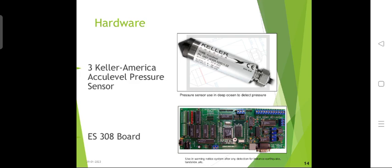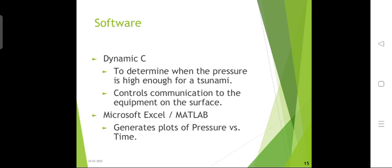Here you will see the hardware used in the DART system. The first component is the Paroscientific pressure sensor, used to detect pressure in the deep ocean. The second is the ES-308 board, used in the warning notice system after detections such as earthquakes or landslides. For software, Dynamic Sea and Microsoft Excel or MATLAB are used. Dynamic Sea reminds the user when pressure is high enough to indicate a tsunami, and controls communication to equipment on the surface. Microsoft Excel or MATLAB generates plots of pressure versus time.